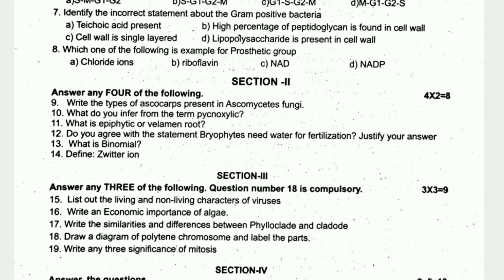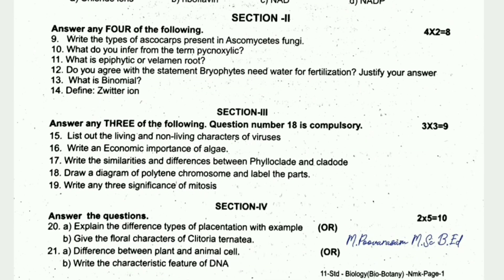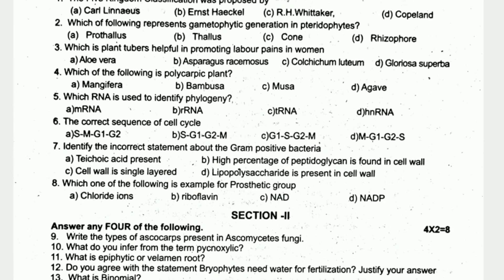Section 3 includes questions on polytene chromosomes and lampbrush chromosomes, carrying 3 marks. Section 4 carries 5 marks for 20 marks total. Questions include: explain the different types of placentation with examples, give the floral characters of Clitoria ternatea, write 21 differences between plant and animal cell, or write the characteristic features of DNA.